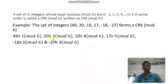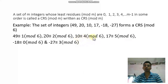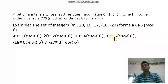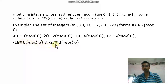10 divided by 6 leaves remainder 4, so 10 is congruent to 4 mod 6. 17 divided by 6 gives remainder 5, so 17 is congruent to 5 mod 6. Similarly, -18 is congruent to 0 mod 6, and -27 is congruent to 3 mod 6. So we can say {49, 20, 10, 17, -18, -27} forms a CRS mod 6.